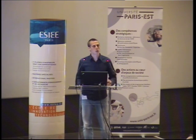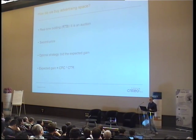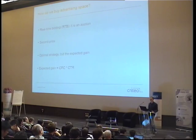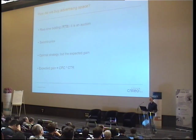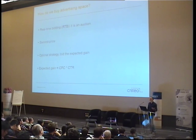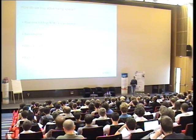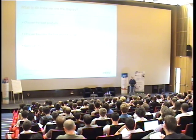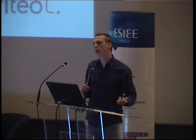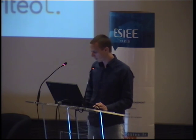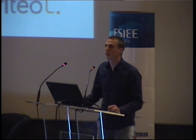Game theory tells us that in that setting the optimal strategy is to bid the expected gain of displaying an ad on that space. The expected gain is how much we are paid per click times the probability that the user is going to click. At the core of what Criteo does is estimating the probability that the user is going to click. If we bid too low we don't buy as many displays as we could and we lose money; if we bid too high we buy displays that are not financially interesting and also lose money.